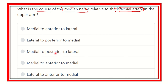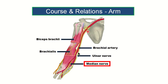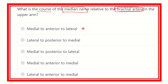We need to find the course of the median nerve relating to the brachial artery. In this image, the red structure is always the artery. We can see different muscles and nerves in the upper limb area. This red point is the brachial artery, and this is the median nerve, which arises from the brachial plexus and is derived from both the medial and lateral cords.